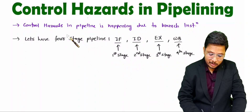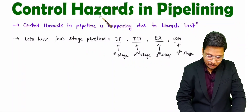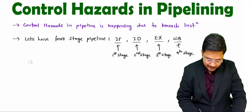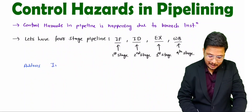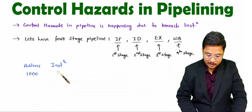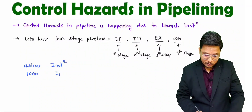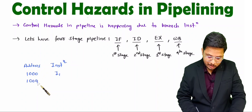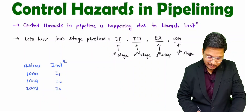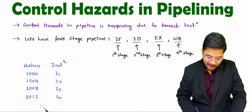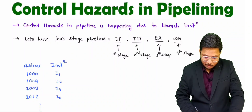To explain control hazards, let us consider execution of instructions step by step. I will be considering addresses and instructions. Let us say the first instruction is at address 1000, and all instructions have a size of four bytes. So the next instruction address will be 1004, then 1008, then 1012, and so on for various instructions.